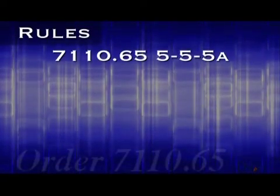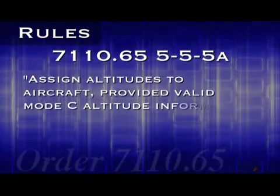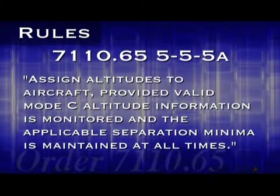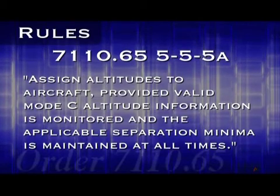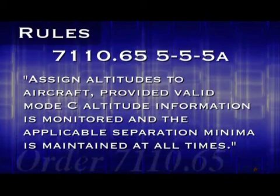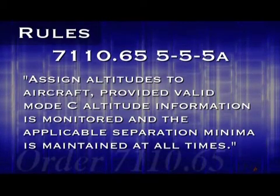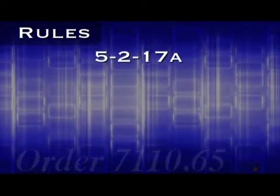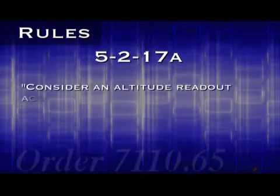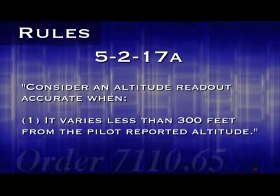Paragraph 5A discusses the basic prerequisite for using this kind of separation: assign altitudes to aircraft, provided valid Mode C altitude information is monitored, and the applicable separation minima is maintained at all times. This is saying that in order to apply Mode C altitude separation, the aircraft in question must be sending valid Mode C data. Chapter 5, Section 2, Paragraph 17A provides the answer: consider an altitude readout accurate when it varies less than 300 feet from the pilot reported altitude.